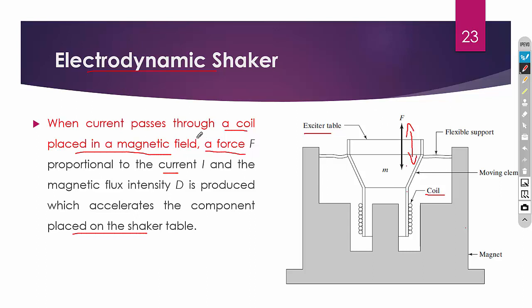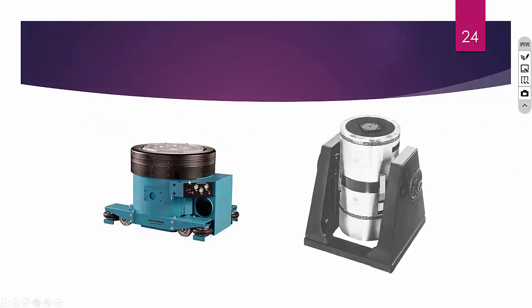The electrodynamic shaker converts electrical input into a mechanical output. In the case of a mechanical vibrator, the motor also converts electrical input into mechanical vibration. The electrodynamic shaker converts the electrical signal into a mechanical output, making it inverse to sensors. Electrodynamic shakers come in a wide variety, and based on requirements we can select the appropriate one.